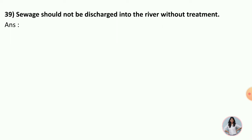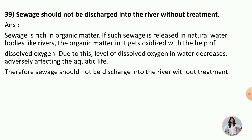Next question: Sewage should not be discharged into the river without treatment. Sewage is rich in organic matter. If such sewage is released in a natural water body like a river, the organic matter in it gets oxidized with the help of dissolved oxygen. Due to this, the level of dissolved oxygen in the water decreases, adversely affecting the aquatic life. Therefore, sewage should not be discharged into the river without treatment.